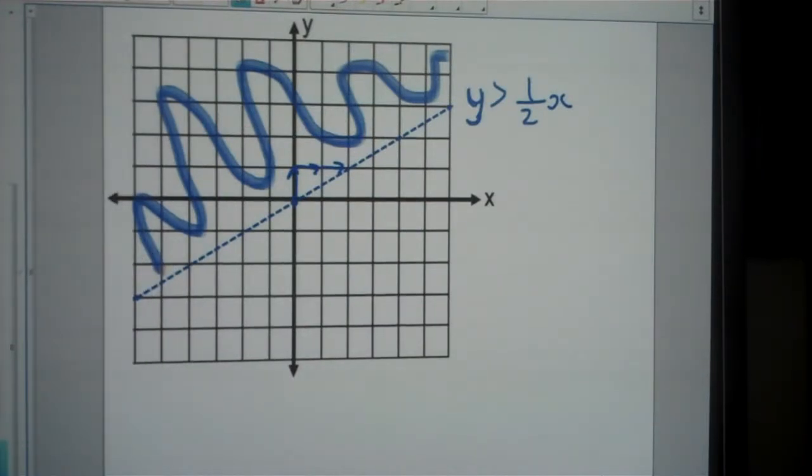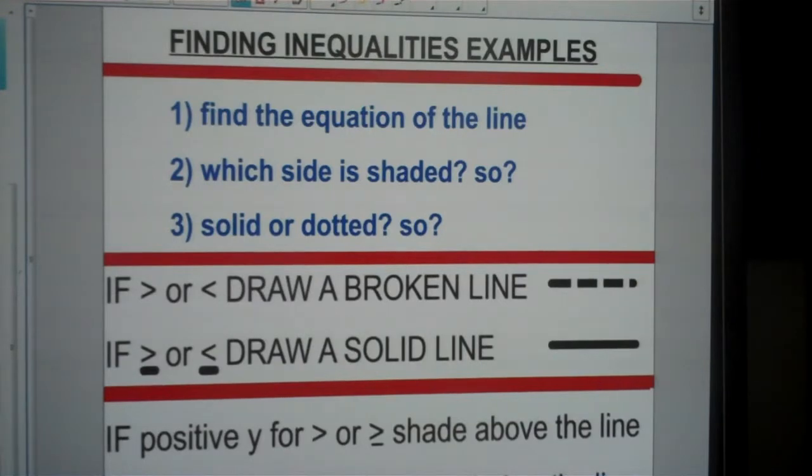Those five examples should be enough for you to work through the worksheet and find your equations. While you're doing it, think back to these things to make your decision on the type of line and which side is shaded so you can fill in your inequality.